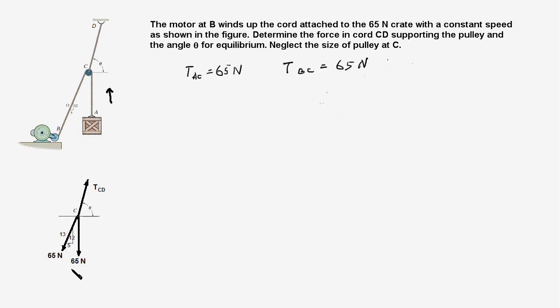This is the tension in AC, and this is the tension in BC. The tension in cord CD is shown as TCD at an angle theta with the horizontal. Now we can apply the equations of equilibrium.